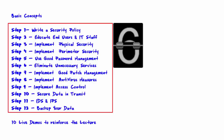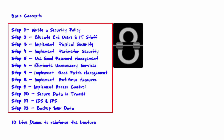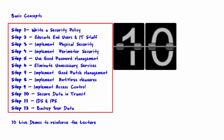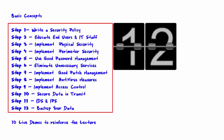Step six: eliminate unnecessary services. Step seven: implement good patch management. Step eight: implement antivirus measures. Step nine: implement access control. Step ten: secure data in transit. Step eleven: IDS and IPS. Step twelve: backup your data.